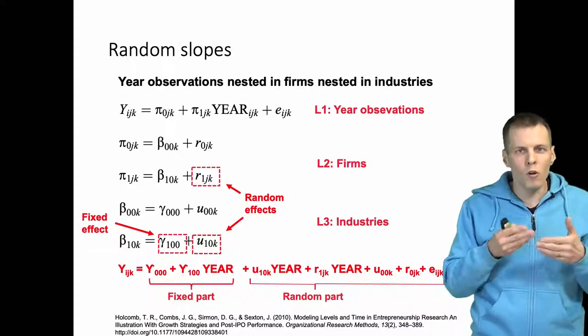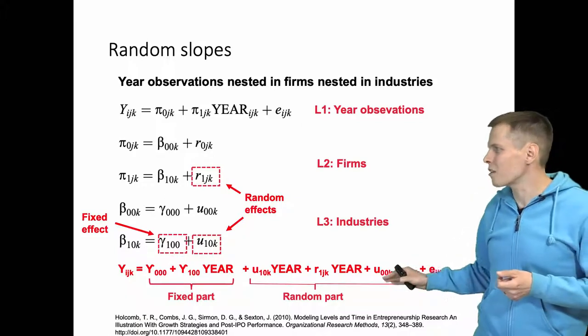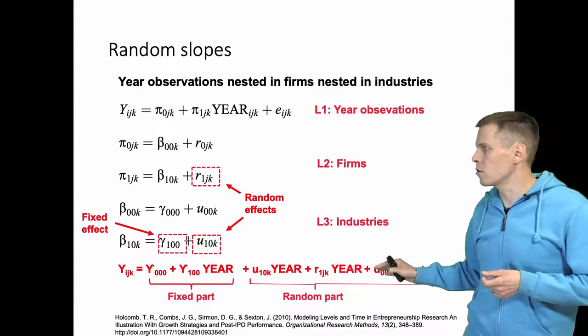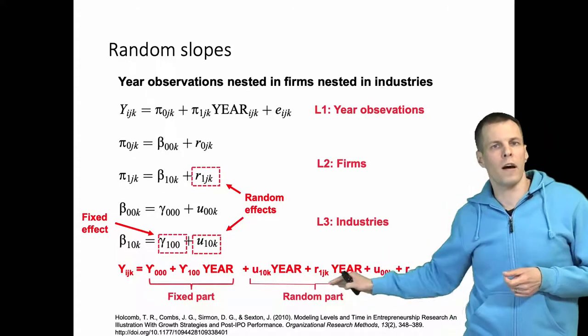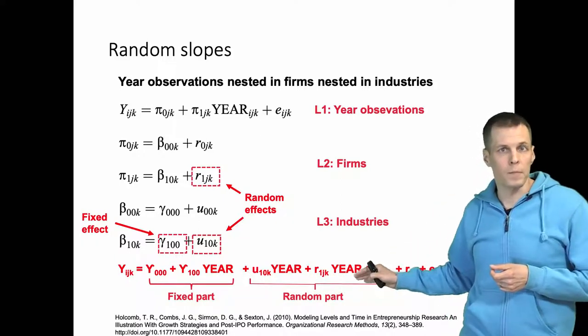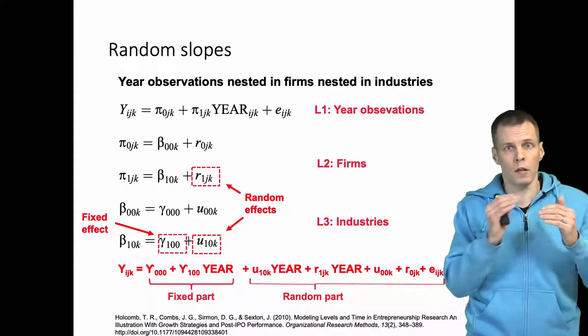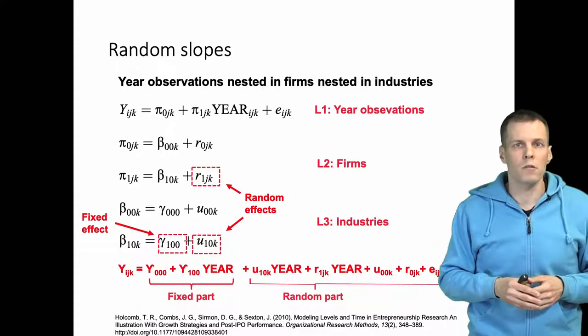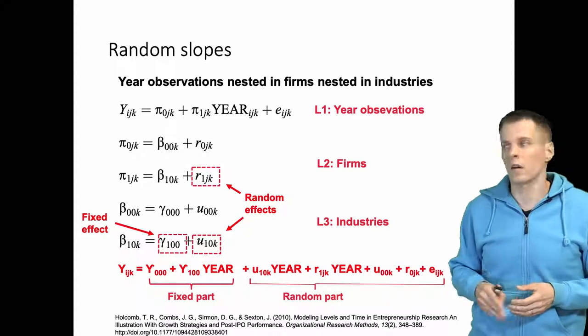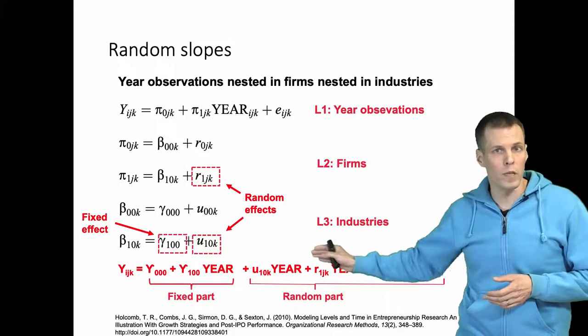A random slope model can be understood as a model that allows a certain kind of heteroscedasticity. The variance of the error term can no longer be constant but must vary as a function of year. If one case goes up and another case goes down over time, then the variation increases, and that variation must be accounted for by the random part, which is assumed to be uncorrelated with the fixed part.